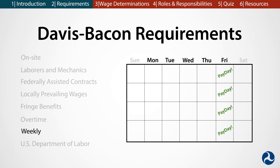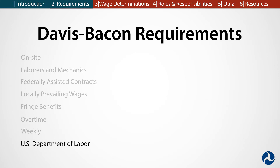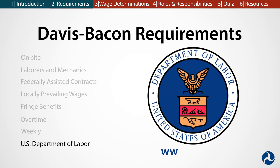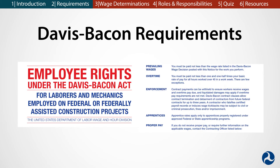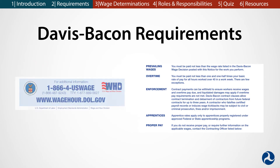U.S. Department of Labor. The U.S. Department of Labor is responsible for DBA regulations and investigates DBA compliance issues. It also develops the wage determinations for each locality. Also, to ensure that laborers and mechanics are aware of the DBA and how it affects them, the requirements of the Davis-Bacon Act must be posted at the job site. This is often done by placing a poster where workers collect their pay.